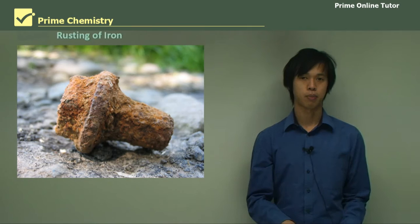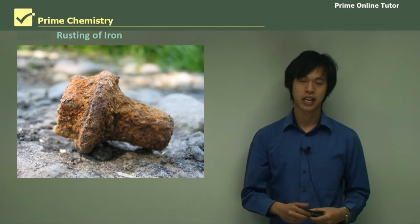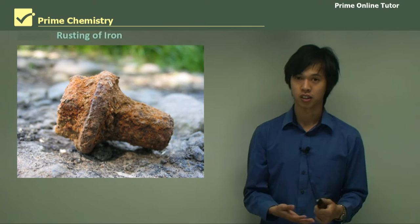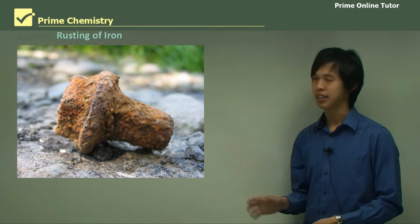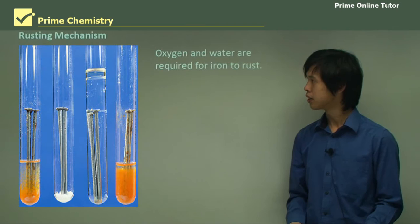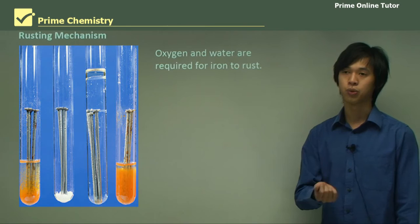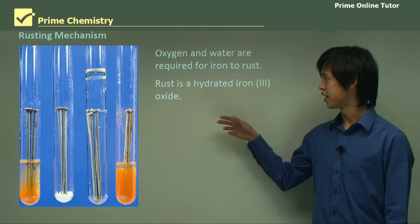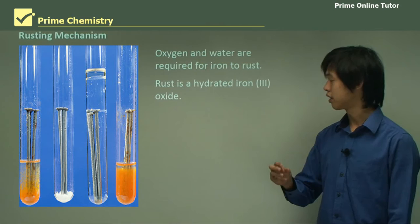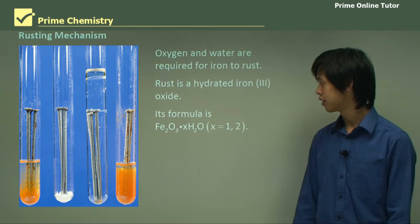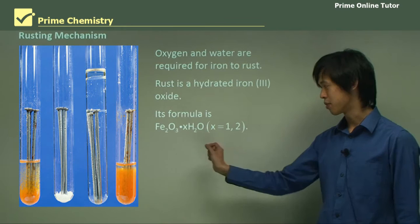Now we're going to look at the main cause of any sort of damage to ships and other metal objects, which is corrosion. We're going to look at the mechanism of rusting — how does rust actually form, and is there a way to hinder it? Oxygen and water are required for iron to rust. Any iron compound or iron alloy will rust, unless it's something like stainless steel. Rust is essentially hydrated iron oxide — Fe2O3 with some X amount of water, where X is either 1 or 2 depending on the chemical conditions.